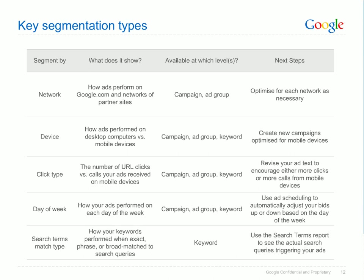Finally, search terms match type is another useful segment available only at the keyword level. This segmentation option shows you how your ads performed when they exactly match, phrase match, or broadly match user search queries. If you see that phrase or broad matches to your keywords are performing differently, you can use the See Search Terms report on the Keywords tab to see which searches in particular are being matched to your ads. These are the key segments available in AdWords, but check the segment drop-down on every tab to look for additional segmentation options that may be helpful to your performance evaluation.